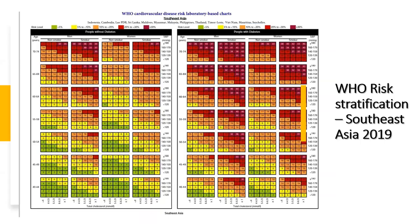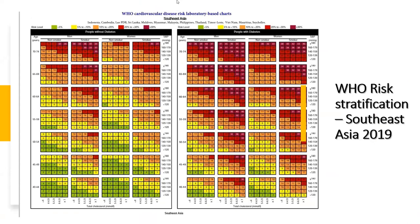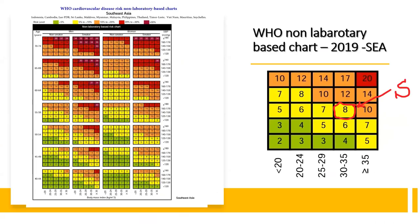For Sri Lanka, the most validated method is the WHO risk stratification charts for Southeast Asia (2019). There are two charts — one using laboratory evidence including total cholesterol, and one without laboratory investigations, using only age, smoking status, sex, systolic blood pressure, and BMI. Using the latter for Mr. S, his cardiovascular risk was 8% — placing him in the low-risk category.